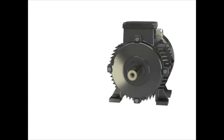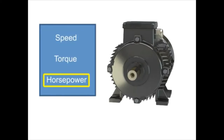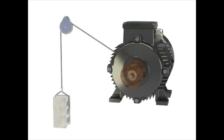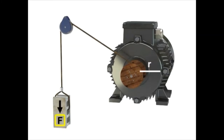The three factors that determine the type of work a motor can produce are speed, torque, and horsepower. Speed is defined as how fast the motor performs its work. For example, a shaft can rotate slowly or quickly. The typical units of measurement for rotational motor speed are revolutions per minute, or RPM. Work is defined as a force applied over a distance. In the case of flywheels, winches, and motors, the work is called torque. Torque is a special type of work that produces rotation.